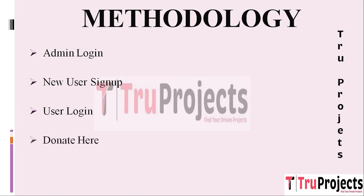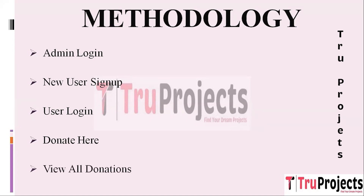The fourth module is Donate Here, which simplifies the donation process for registered users. They choose the donation type, provide details about what they are donating, and submit the information. This information is securely stored on the blockchain for transparency.